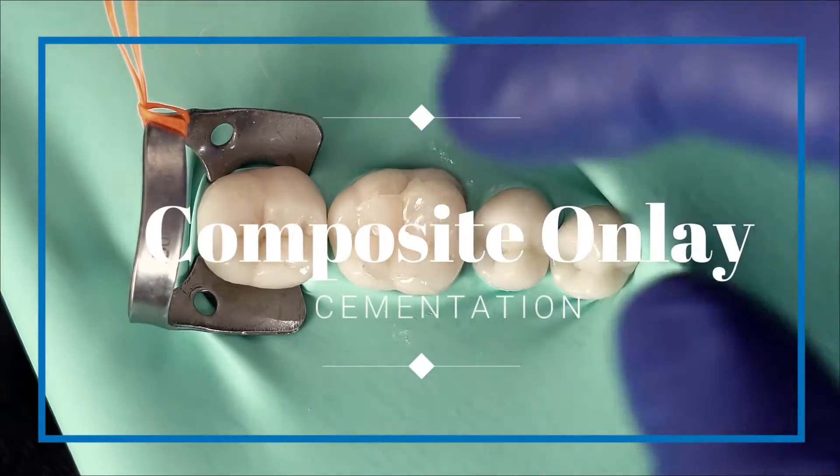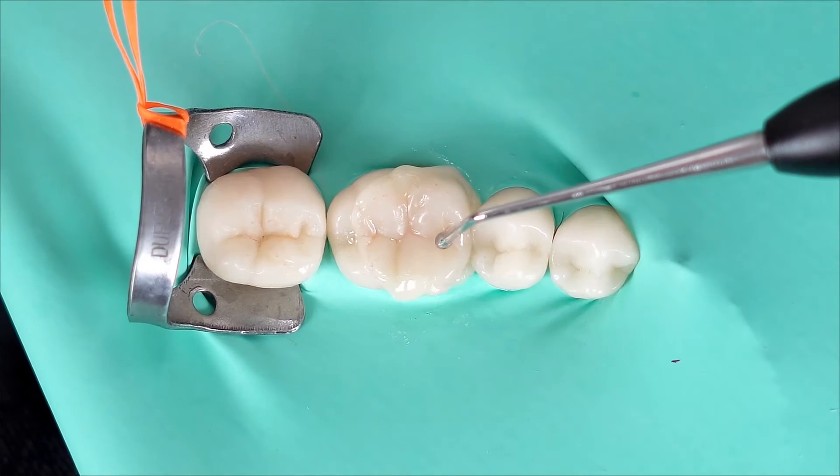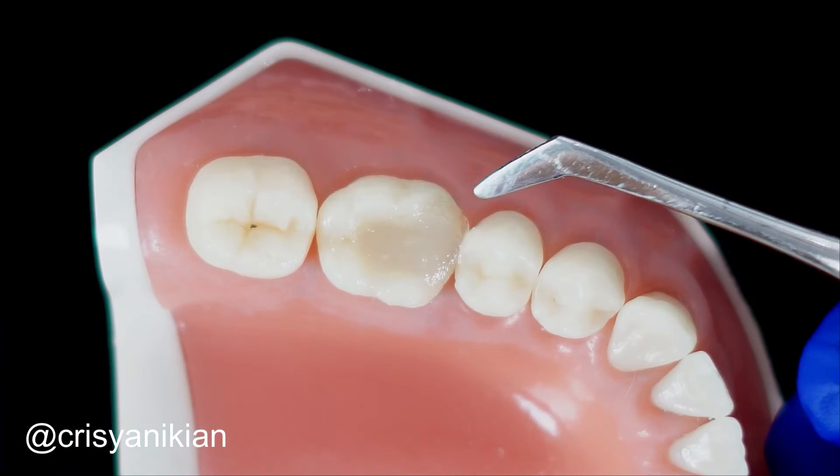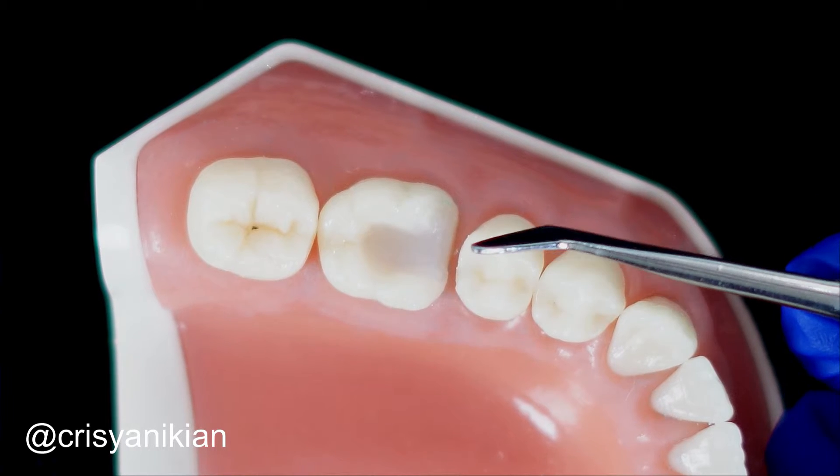We have reached the end of the series composite onlay. Today I will show you how to cement it. But before, remove the temporary restoration by gently forcing it with a blunt-tipped instrument.